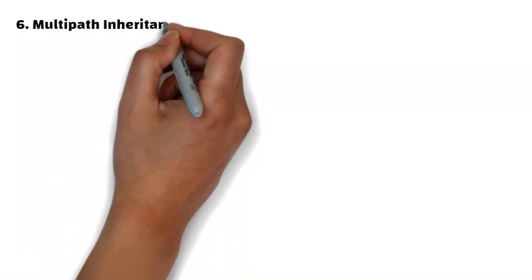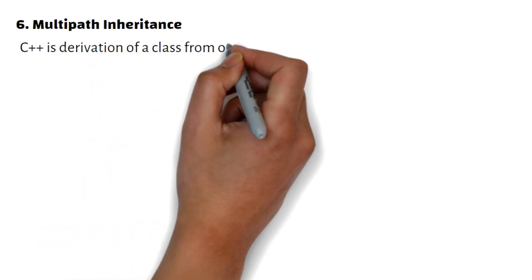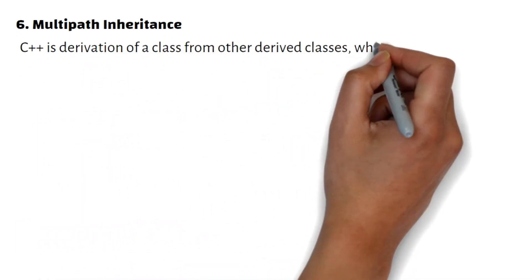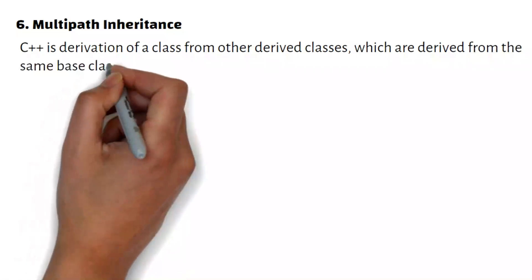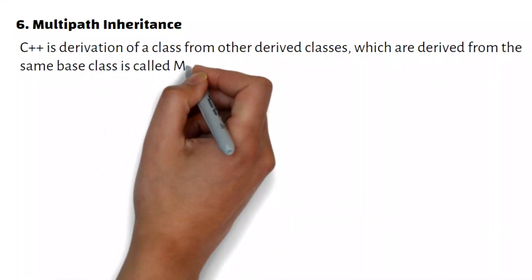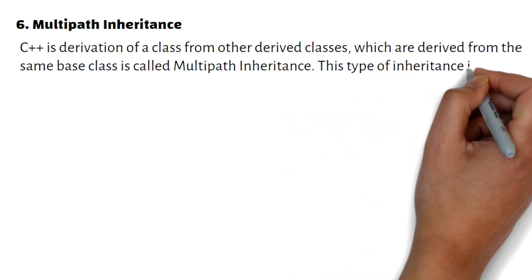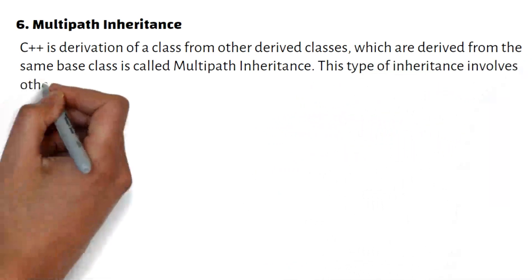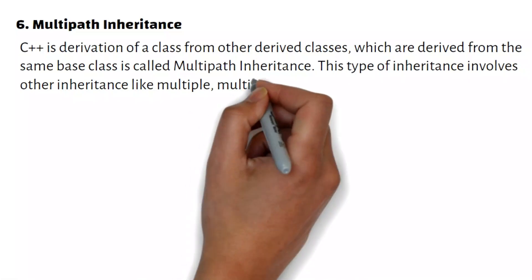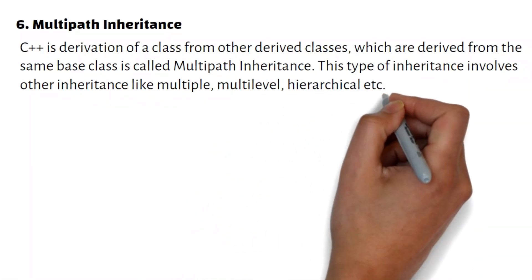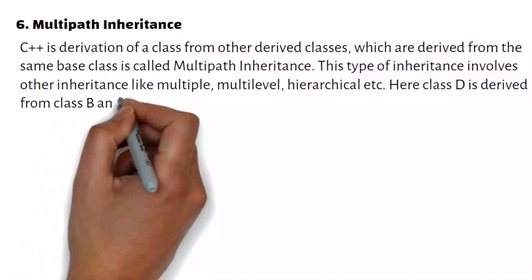Multipath inheritance: derivation of a class from other derived classes which are derived from the same base class is called multipath inheritance. This type of inheritance involves other types of inheritance like multiple, multilevel, hierarchical, etc. For example, here class D is derived from class B and C.